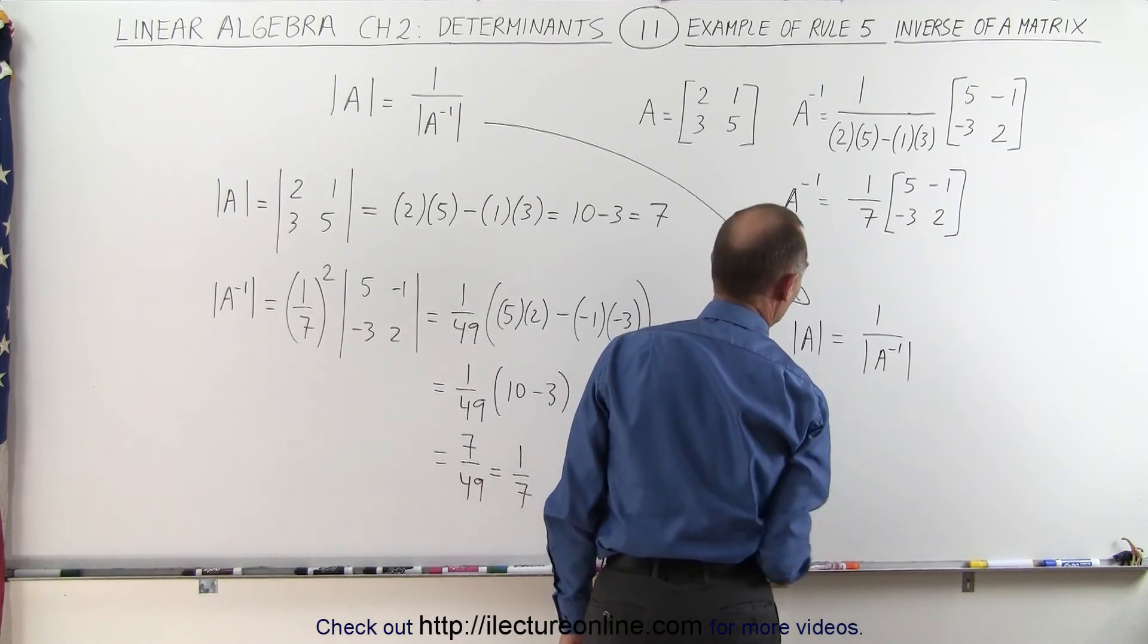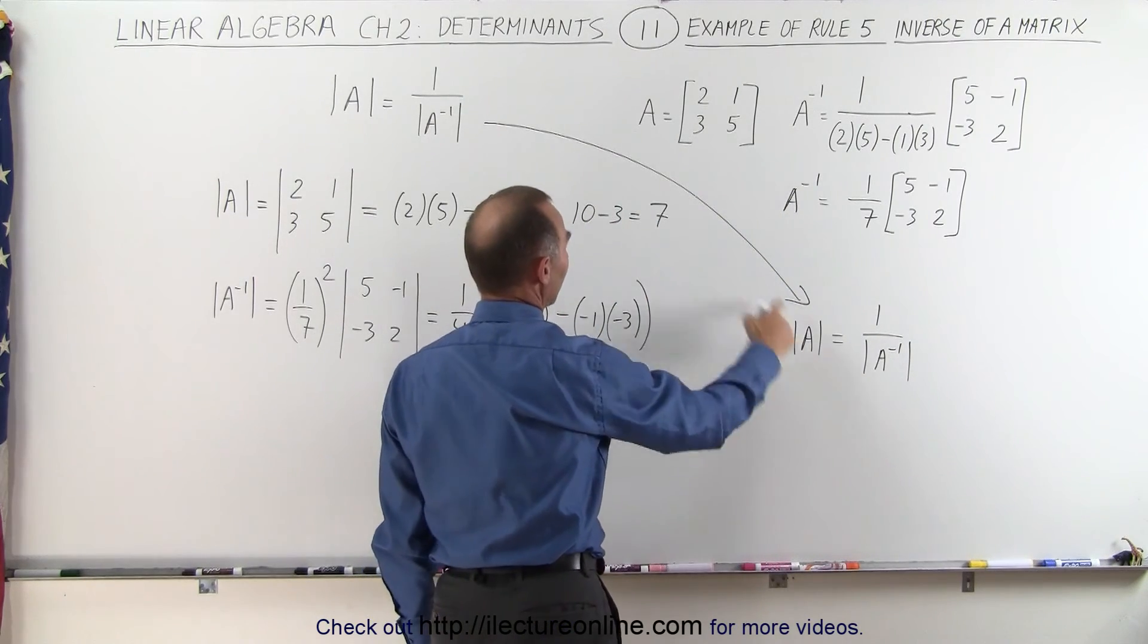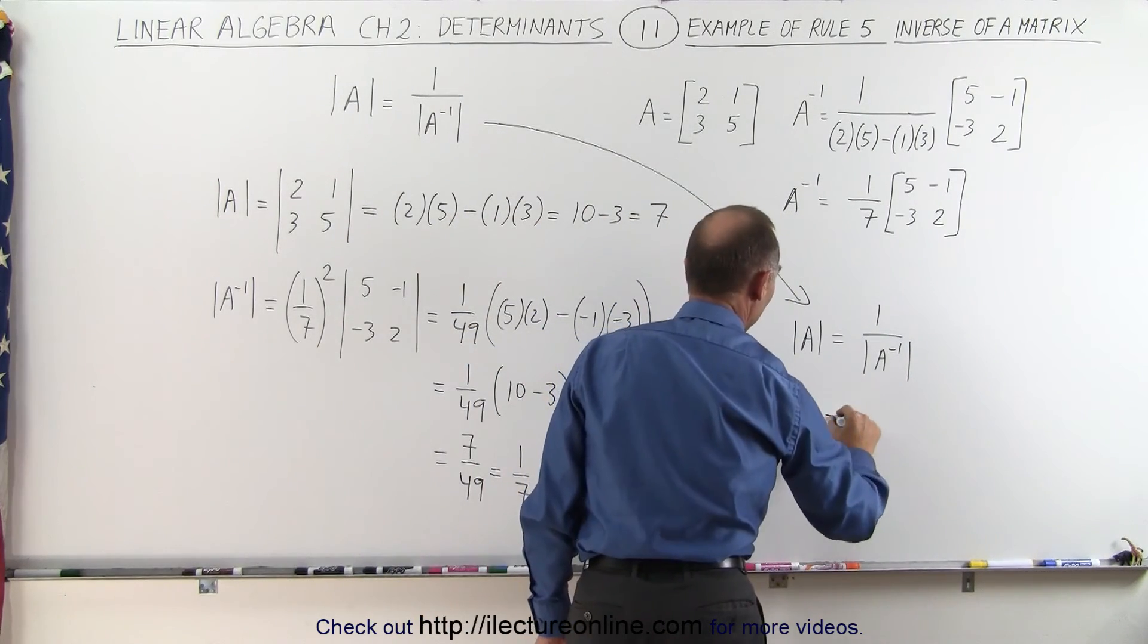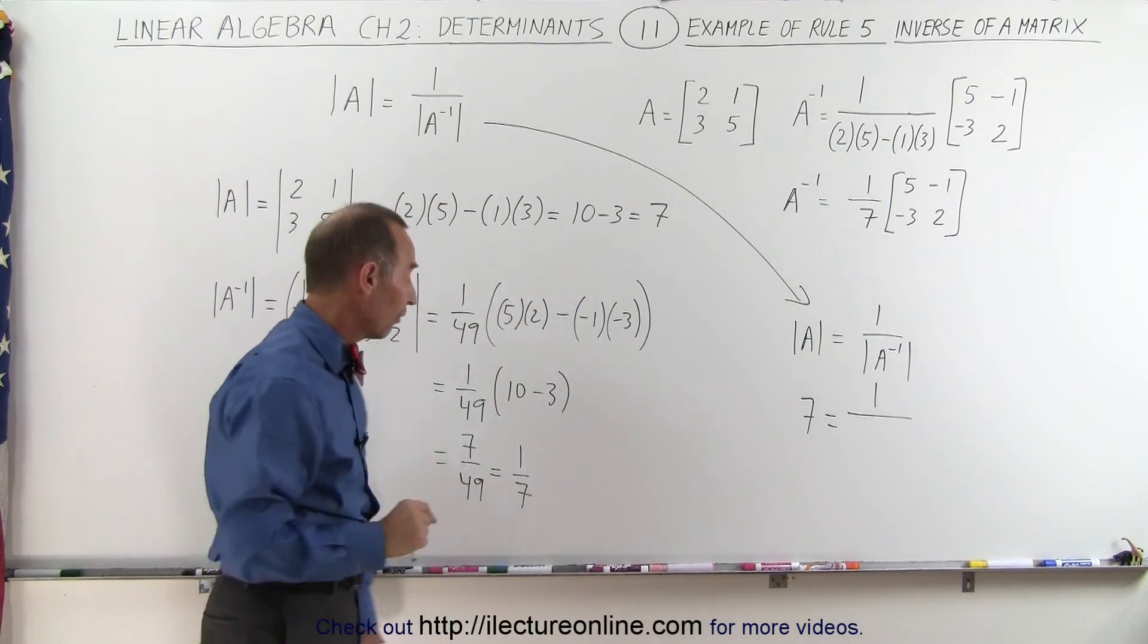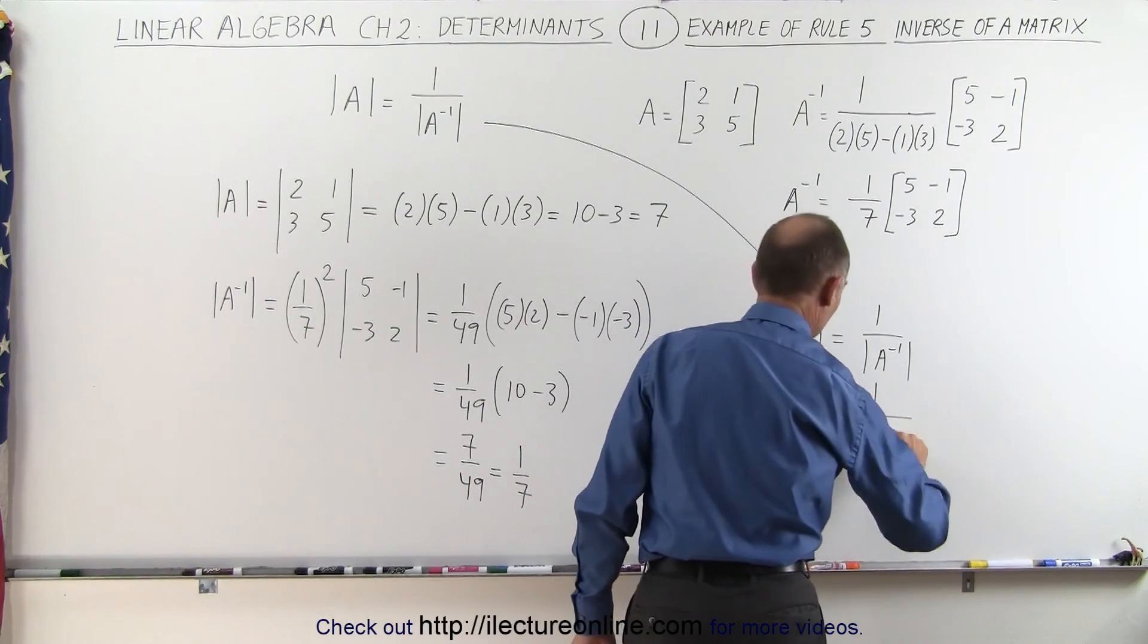And we can see here that the determinant of matrix A is equal to 7, that is equal to 1 divided by the determinant of the inverse of matrix A which is 1 over 7.